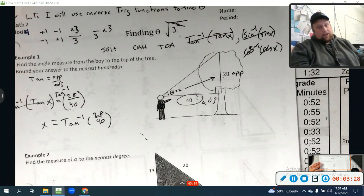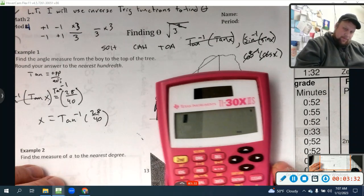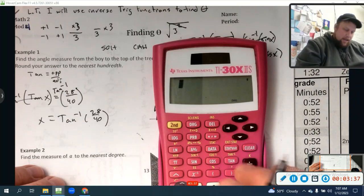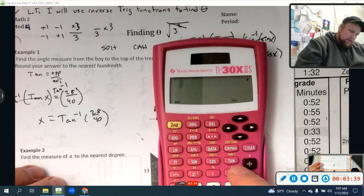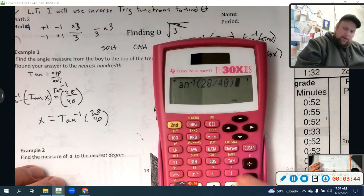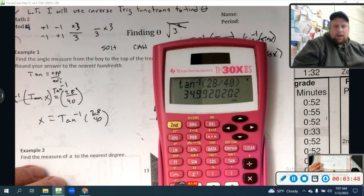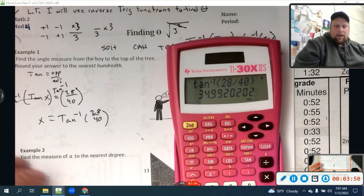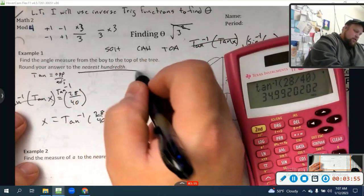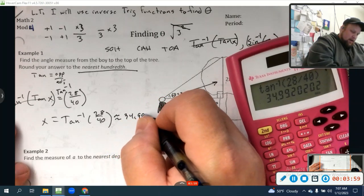Let's do that on the calculator, because you're going to need to. So if you look right above tangent, you can't see that. Right above tangent says tangent to the negative 1. That's the inverse tangent. So the second function, that. And we're going to do 28 divided by 40. Make sure it's in degree mode. You see mine says DEG on bottom. And look at that. We get approximately 34.99 degrees. It says to round to the nearest hundredth. So this is approximately 34.99 degrees.